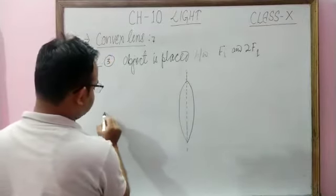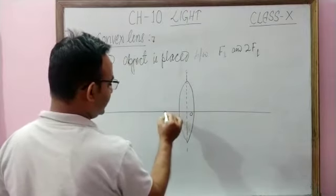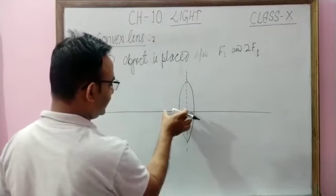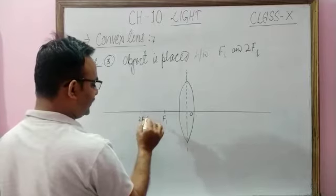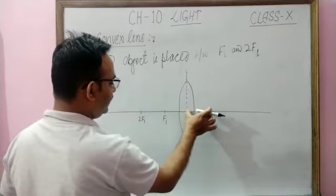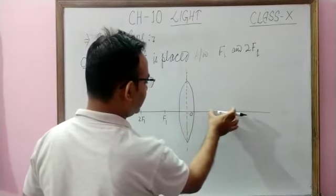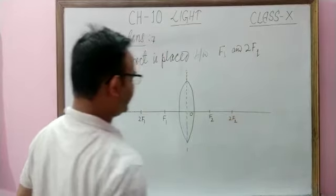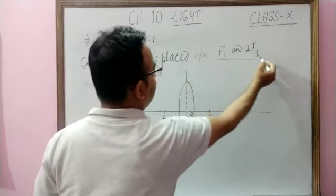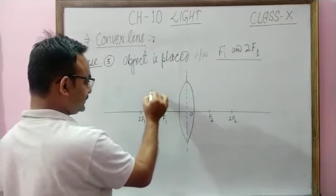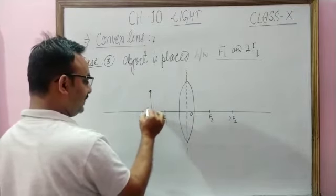Suppose this one is here — convex lens with the principal axis and optical center marked. We label F1, 2F1, F2, and 2F2. The condition is: object AB is placed between F1 and 2F1.